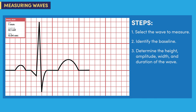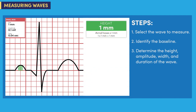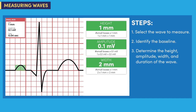I'll use the P wave to demonstrate. Then you'll have a chance to measure the T wave on your own. For step one, I have selected the P wave to measure. For step two, here's the baseline — I'm using this area of the baseline because that is where the wave appears. For step three, I see that the height of the P wave is one millimeter, so that means the amplitude is 0.1 millivolts. And the width of the P wave is two millimeters, so the duration is 0.08 seconds or 80 milliseconds.